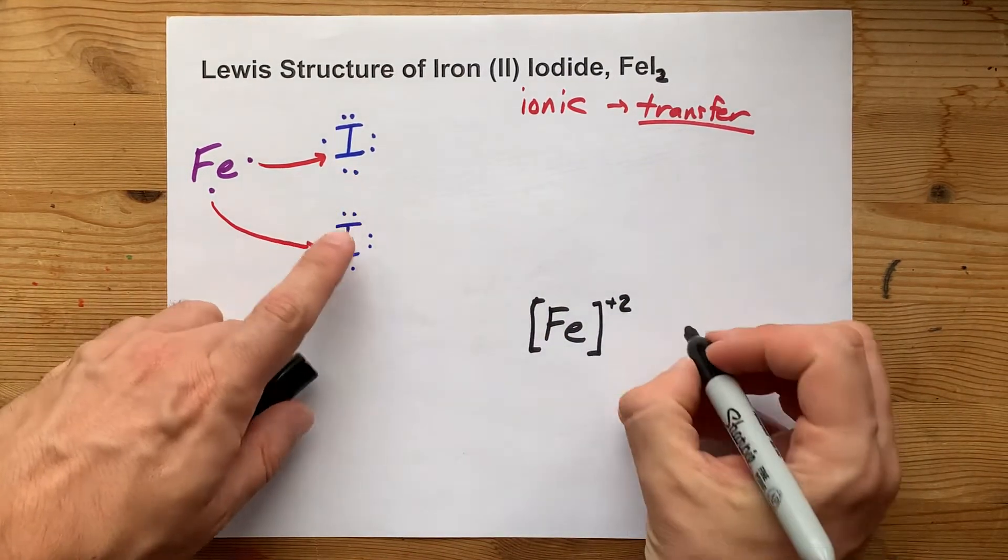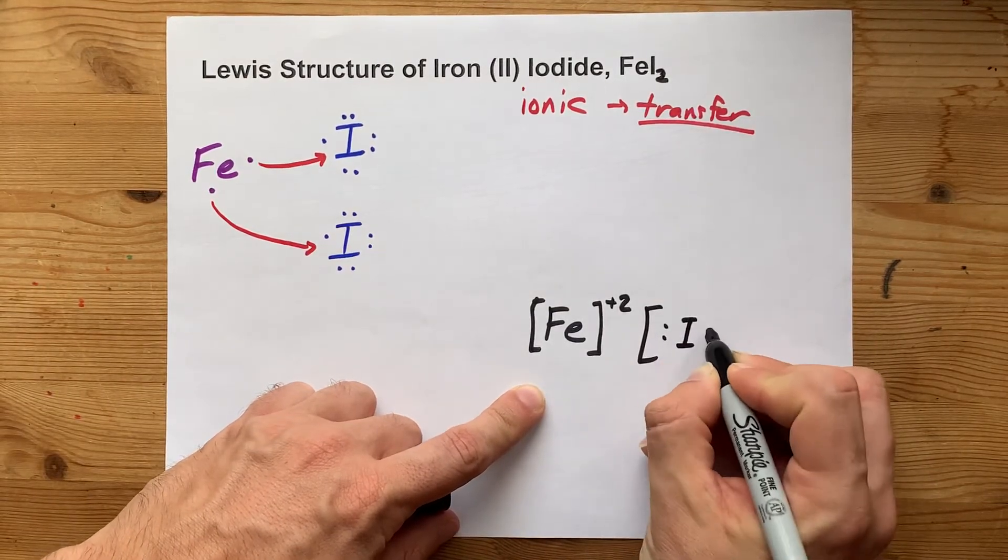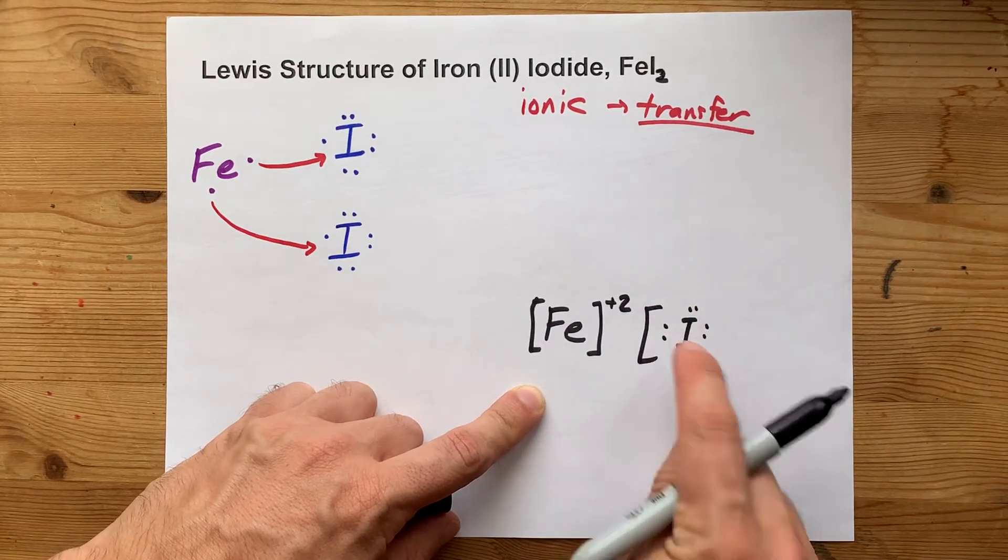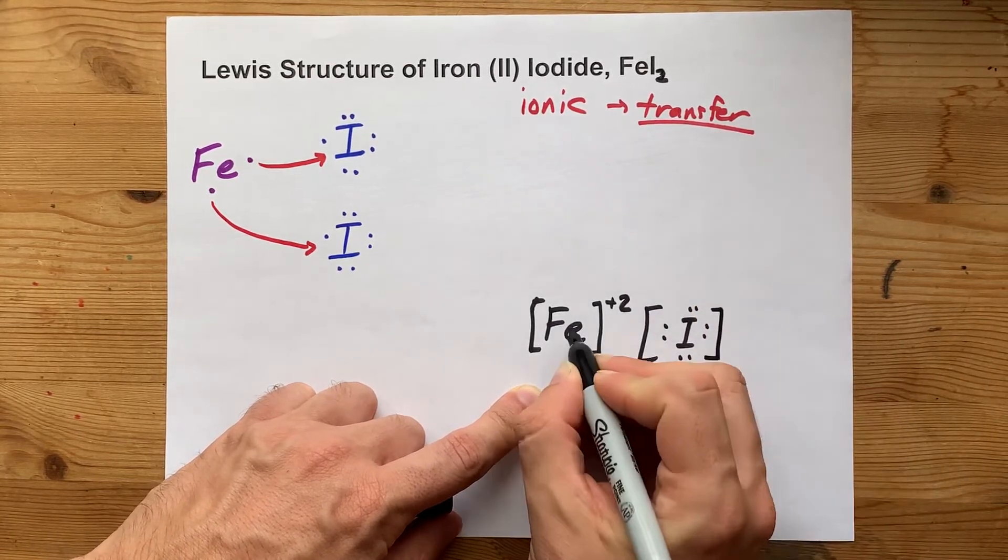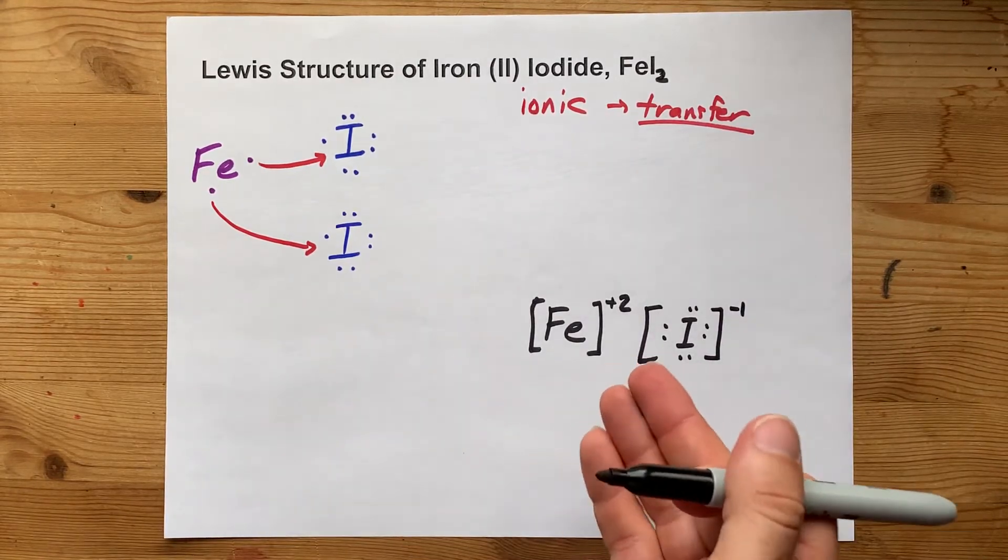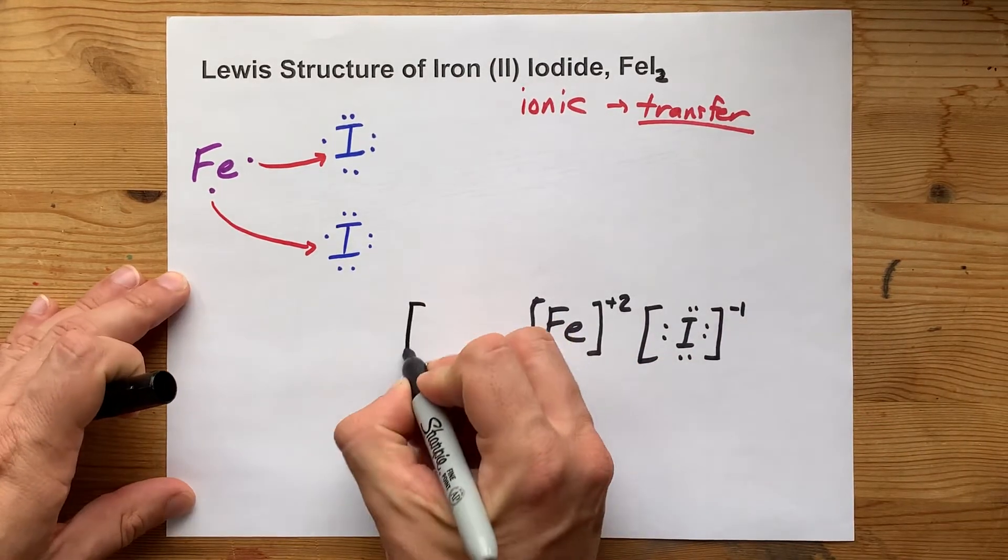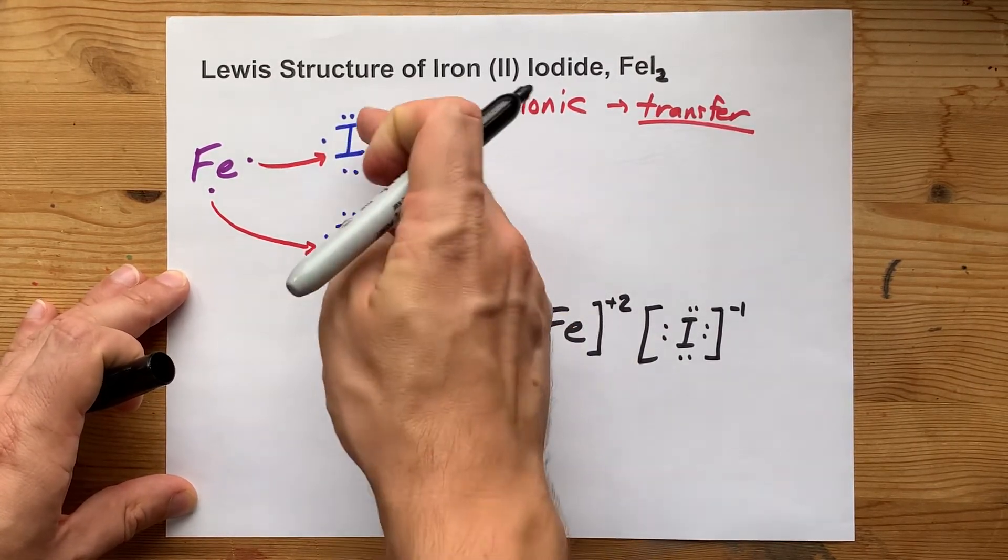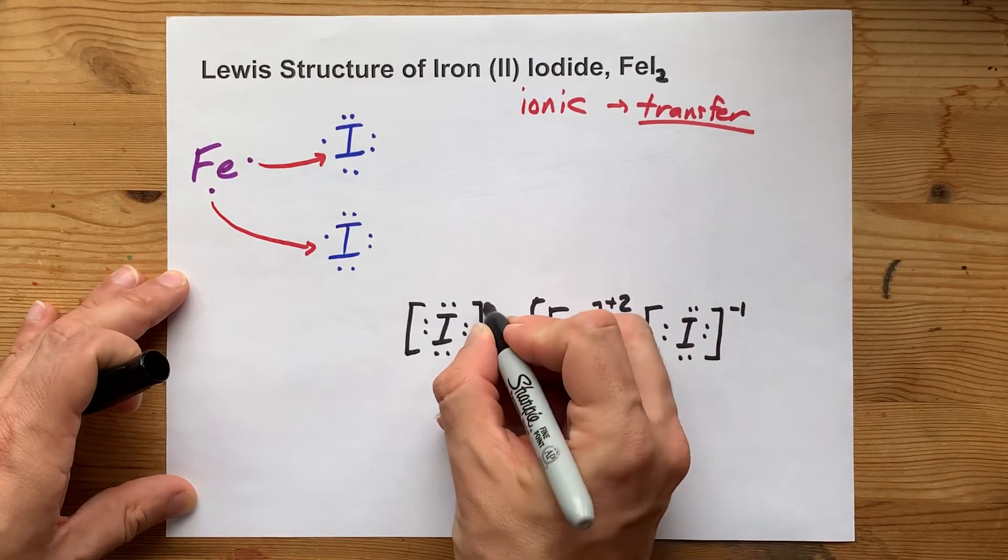And the iodines are now iodide. I'm going to draw them here with 8 electrons around it. That's the 7 originals plus the 1 that iron gave it. And it has a minus 1 charge because it has the extra minus charged electron. You're going to have to draw 2 of those iodides because you needed 2 of them to absorb the electrons from iron.